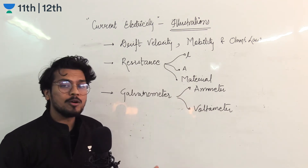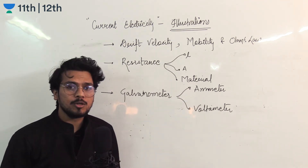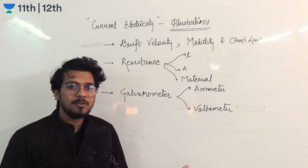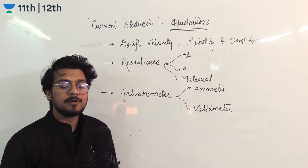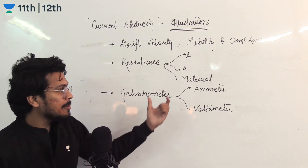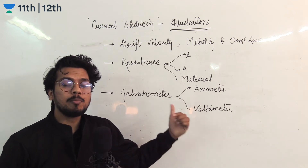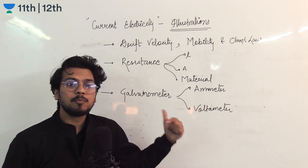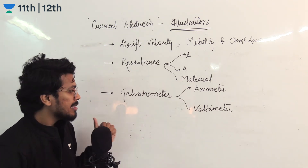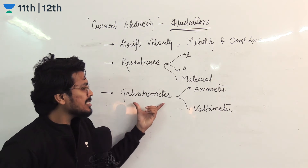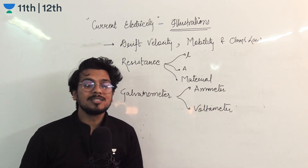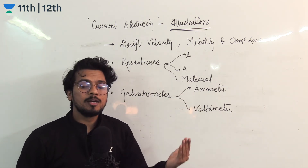This will generate one basic conceptual question — for example, if we change the area, then what will be the resistance? Always remember, when the area is changed, you will recall that the volume is constant. Then last is the galvanometer, ammeter, and voltmeter — qualitative analysis — understanding what will change when the voltmeter is created and where the resistance is connected.